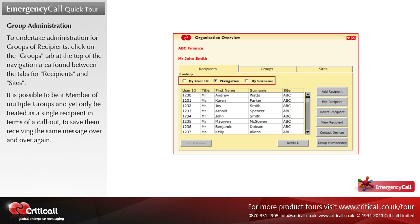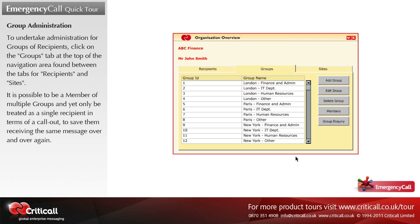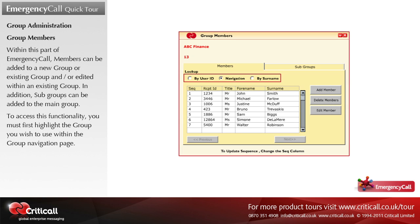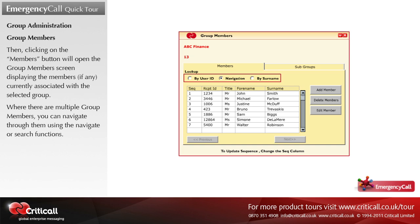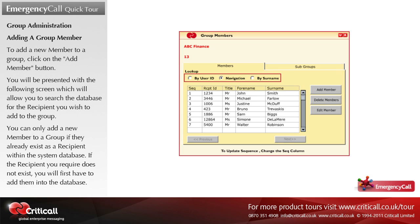For group administration, click on the groups tab at the top of the navigation area, found between the tabs for recipients and sites. It is possible to be a member of multiple groups and yet only be treated as a single recipient in terms of a call out, to avoid receiving the same message repeatedly. Within this part of Emergency Call, members can be added to a new or existing group and edited within an existing group. In addition, subgroups can be added to the main group. To access this functionality, you must first highlight the group you wish to use within the group navigation page, then clicking on the members button will open the group members screen.